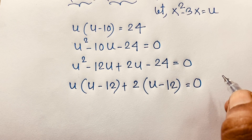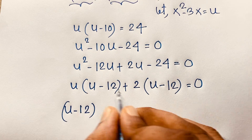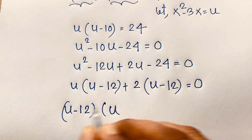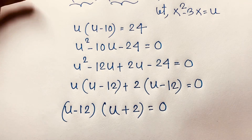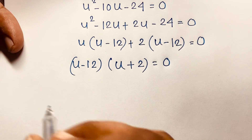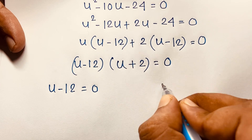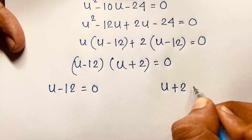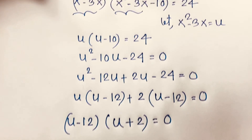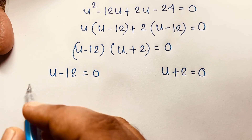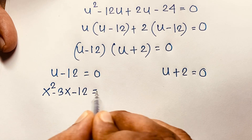Then here, (u minus 12) is common, so taking (u minus 12) as common gives (u minus 12)(u plus 2) is equal to 0. Now we have two cases. First case: u minus 12 is equal to 0. Second case: u plus 2 is equal to 0. Recalling that u equals x squared minus 3x, substituting back gives: x squared minus 3x minus 12 is equal to 0.